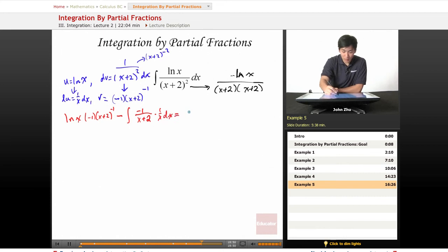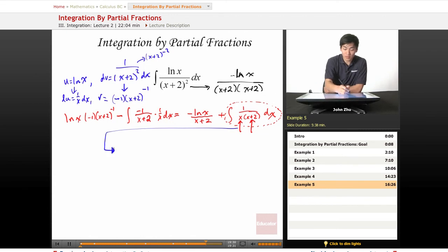So let's rewrite this a little bit: negative ln of x divided by (x + 2) plus the integral of 1 over x times (x + 2) dx. So notice right away that this term is solved for. And this term, we have an integration by partial fractions situation where the denominator is comprised of two multiplying x terms, x and (x + 2). So let's do an entire another problem solving set up here.